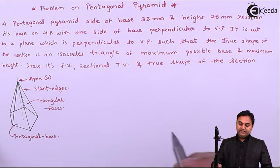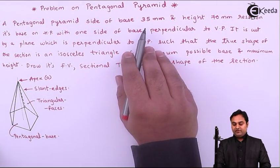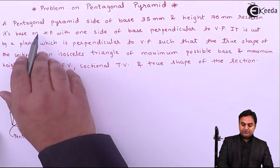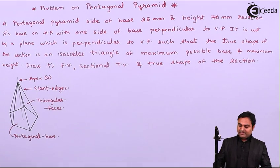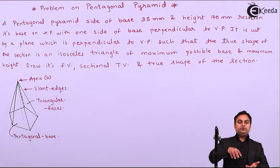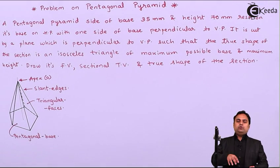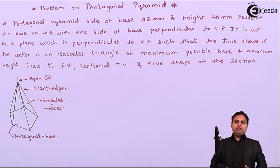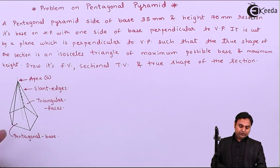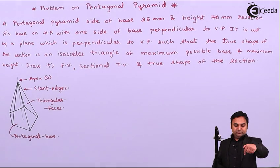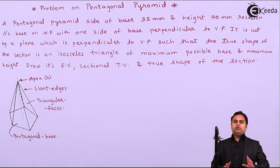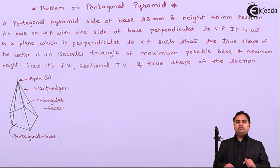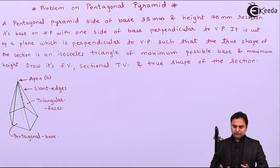In the question, it is given that the pentagonal pyramid of side 35 mm and height 70 mm rests on its base on HP. So it is resting on HP as shown in the diagram. We can consider this pentagon to be kept in HP, that is on the ground. When keeping it on the ground, from the front we are going to see the triangular faces, but from the top we are going to see the pentagonal base. So we have to draw that pentagon in HP, because in the top view it will be seen as a pentagon. Let us get started with the solution.